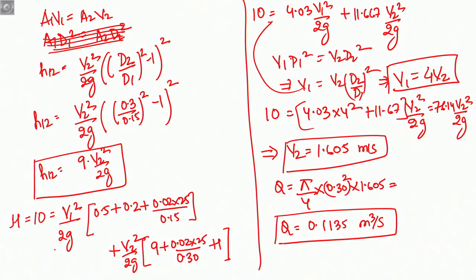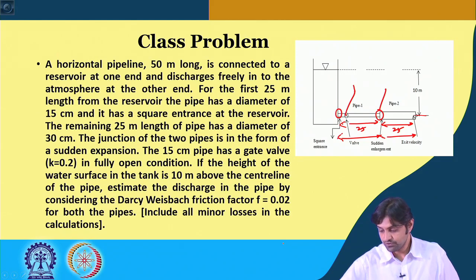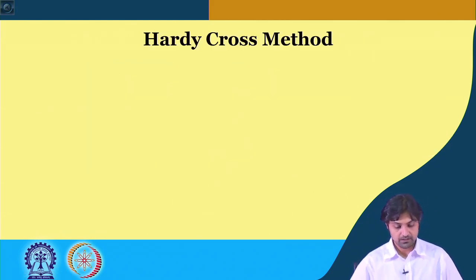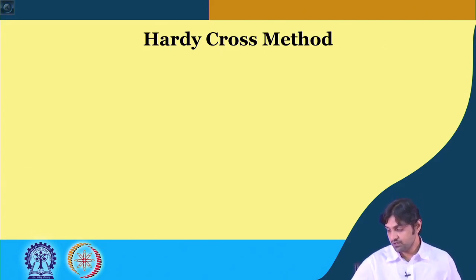You see how we have applied the principles of major and minor losses together with the equation of continuity to solve such a complex problem. Now we go back and start what we promised: the Hardy Cross method.